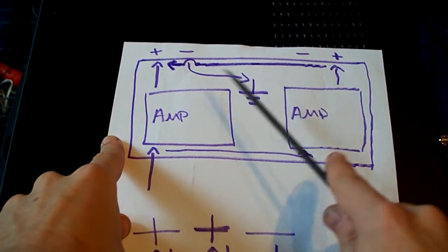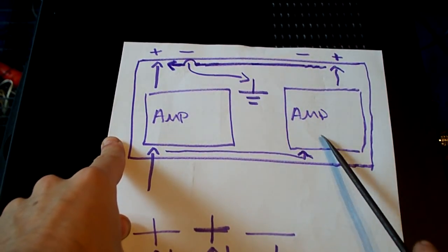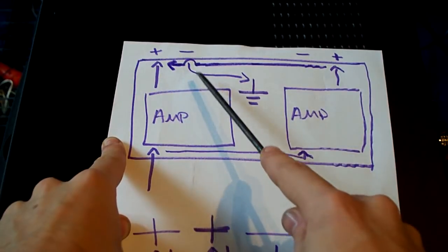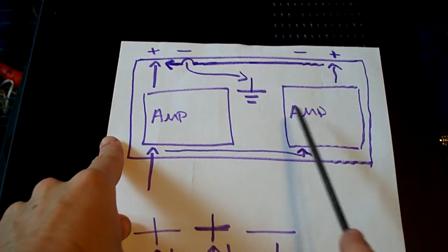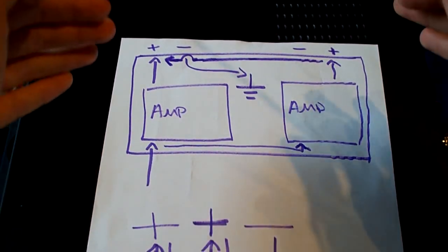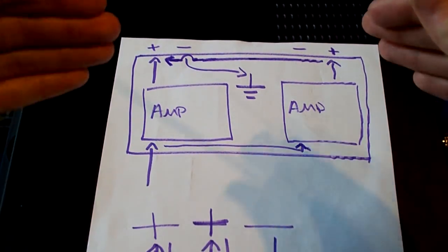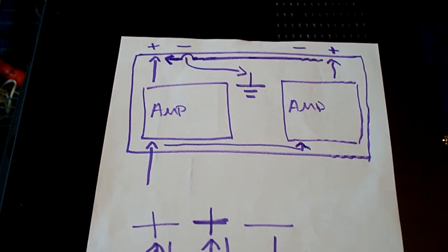However, if your amp is only 4-ohm stable and it's parallel mono, you can run it at 2 ohms, which means you get double the power. Because there's two amplifiers running in parallel, it means you can half the least ohm load that it can take.